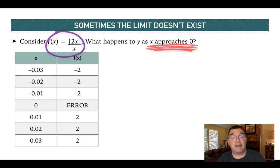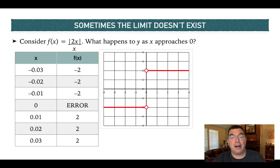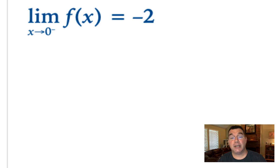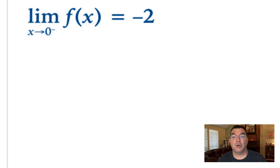Here's a table of values for that function, and as you look at the graph and the table, you'll notice that as I approach x equals 0 from the left — note that terminology and notation, indicated by that little minus sign — that means I am looking at x values that are slightly less than 0. As I approach 0 from the left, all the y values are negative 2.